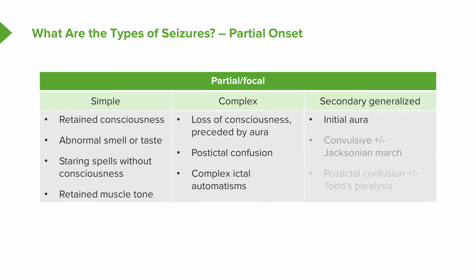Secondary generalized seizures begin with an initial aura and then progress to involve convulsions. That progression has been termed a Jacksonian march, which classically begins with motor activity in one limb that progresses up the limb, involving the entire limb, and then generalizing throughout the body. Secondary generalized seizures are characterized by post-ictal confusion and sometimes a type of paralysis — weakness on one side of the body, the side opposite where the seizure began, as a result of post-ictal depression of brain activity.